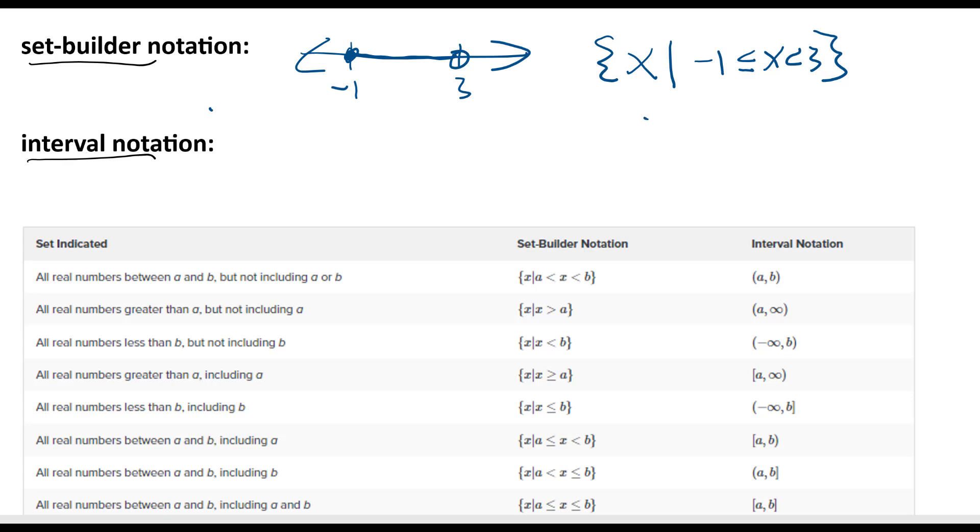And to do interval notation now, we would just do a squared off bracket for the place where it's equal to it. Get that squared off bracket, negative 1 comma, and it goes up to 3. But it's not equal to 3. If it's an open circle, we'll have a parenthesis. So an open circle is represented by a parenthesis.